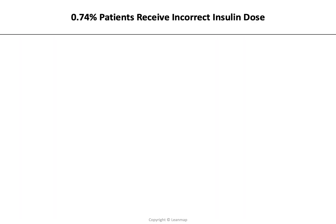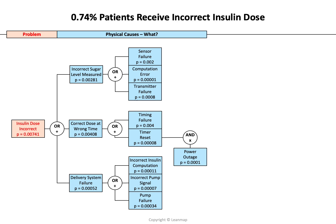Let's look at an actual example: 0.74% of patients receive an incorrect insulin dose — that's the problem. The physical causes are incorrect sugar level measured, incorrect dose administered at the wrong time, or delivery system failure. Breaking these down further: the incorrect sugar level was measured because of sensor failure, computation failure, or transmission failure. The correct dose was administered at the wrong time because of a timing failure or a timer reset. And the delivery system failure was caused by an incorrect insulin computation, an incorrect pump signal, or a pump failure.